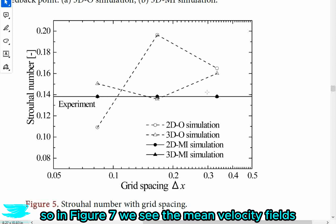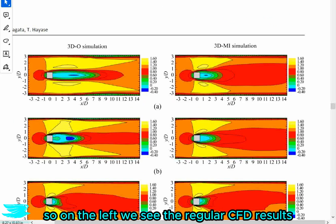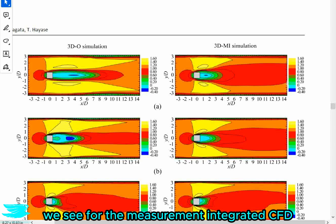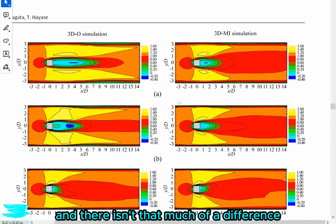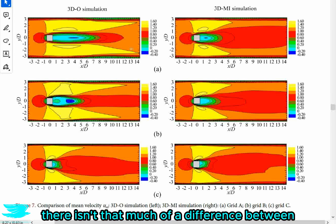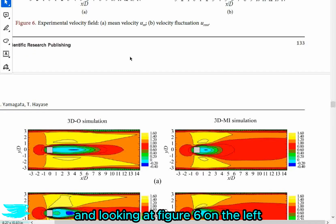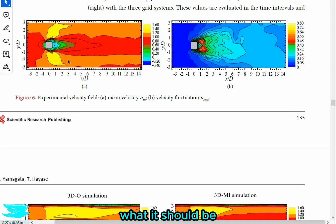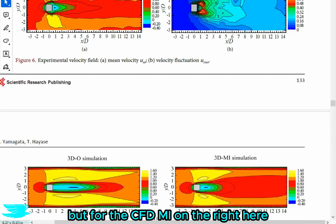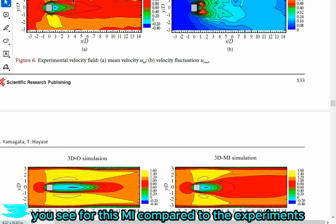So in figure seven, we see the mean velocity fields. If I scroll down here, so on the left, we see the regular CFD results, and on the right, we see for the measurement integrated CFD. And there isn't that much of a difference. This is for the mean velocities, by the way, just to emphasize that. There isn't that much of a difference between the finest meshes. For the coarsest meshes, okay, the regular CFD has a much greater wake. And looking at figure six on the left, we see the experimental data and what it should be compared to the CFD, which is very wrong. But for the CFD MI on the right here, even for the coarsest mesh, the results are pretty close to experimental data.